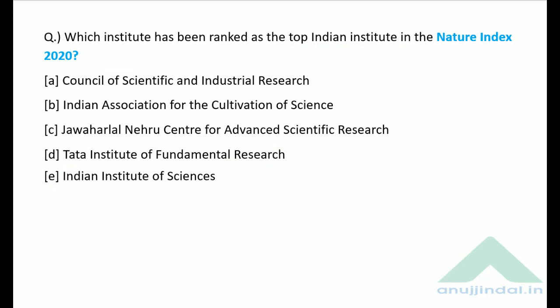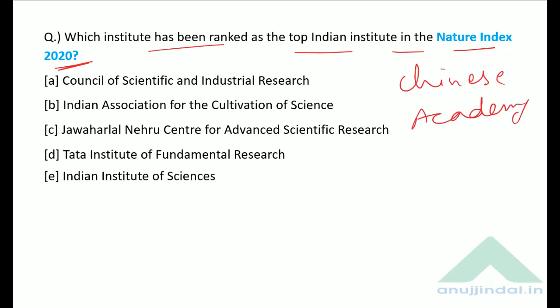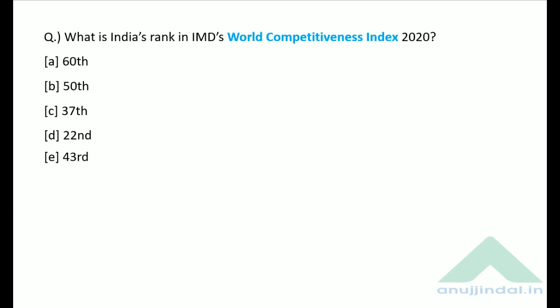Which institute has been ranked as the top Indian institute in the Nature Index 2020? Overall, number one is the Chinese Academy of Sciences. From India, it is CSIR — the Council of Scientific and Industrial Research.